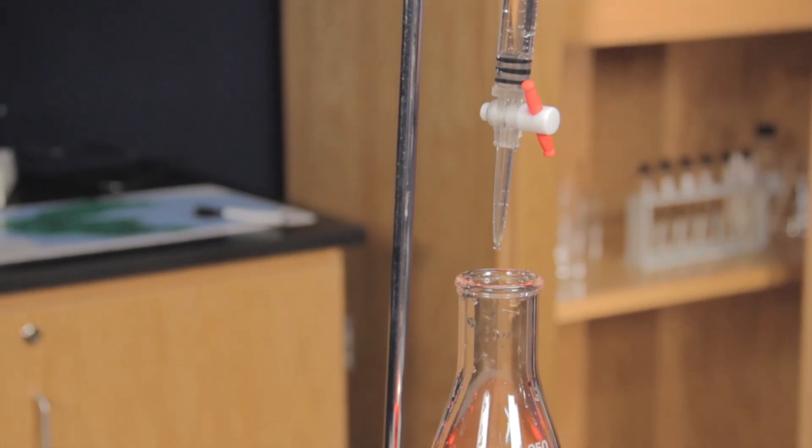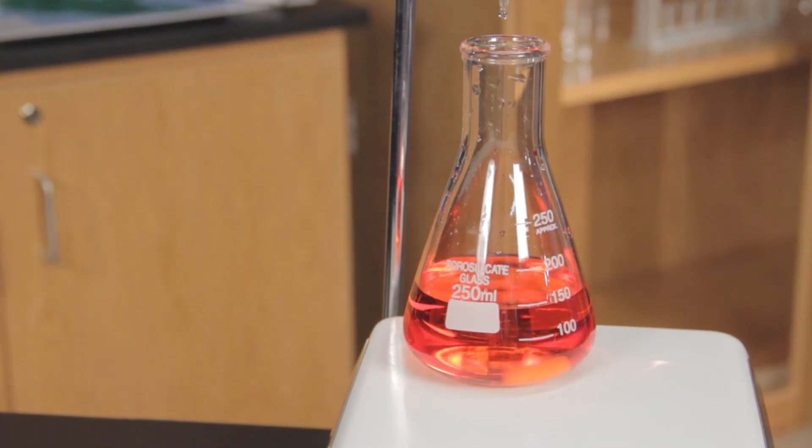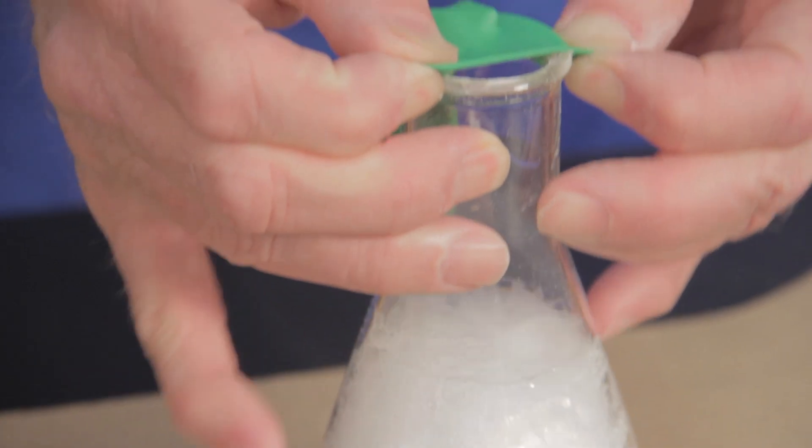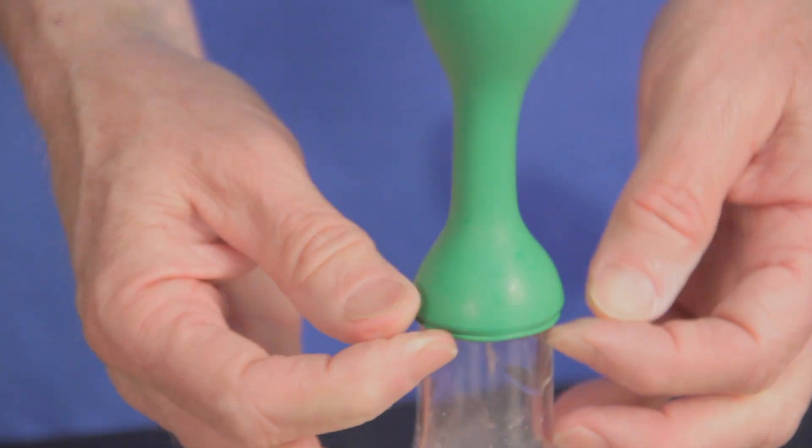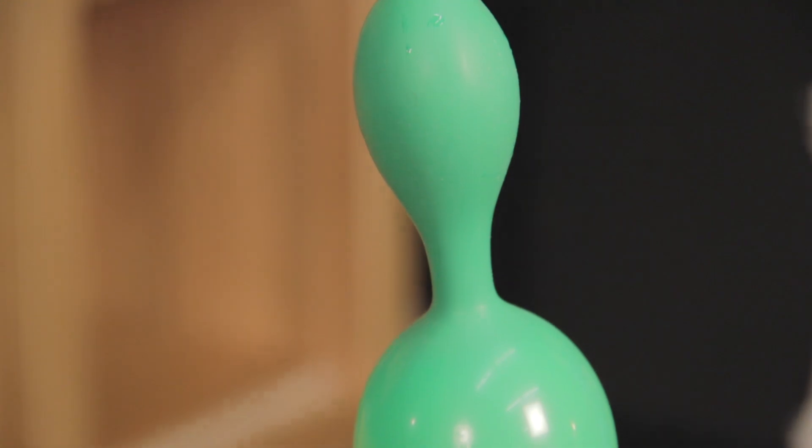Erlenmeyer flasks are also useful in titrations as a container for the solution being titrated. To demonstrate gas produced in a chemical reaction, place a balloon over the opening of the flask to capture the gas. This serves as a great visual demonstration of gas production for students.